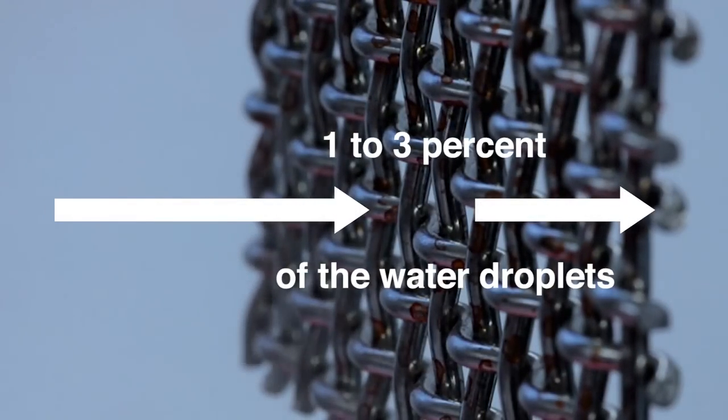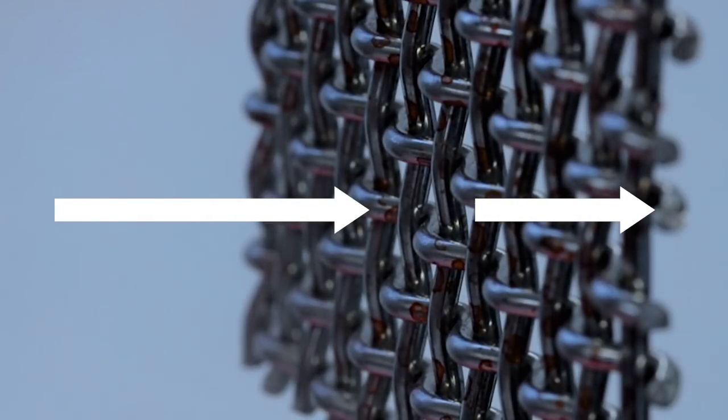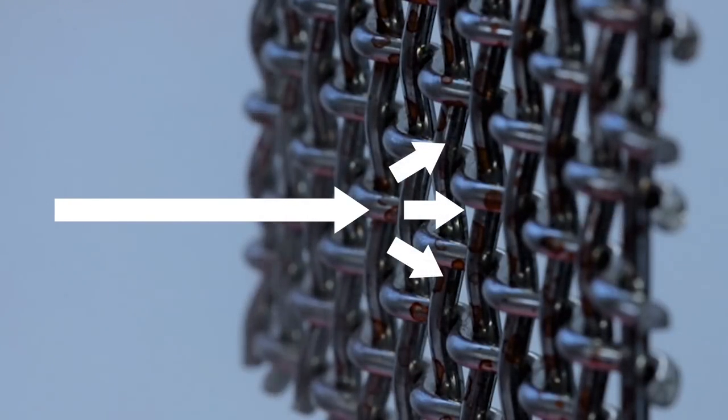The reason for such a tiny percentage is the result of aerodynamics. As a stream of air passes an obstacle, such as the wires in these mesh fog-catching screens, the airflow naturally deviates around the obstacle, thus carrying droplets that were heading toward the wire off to the side.